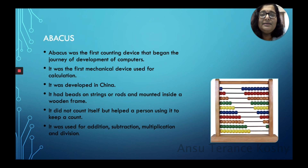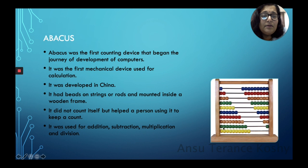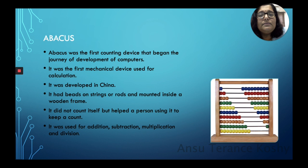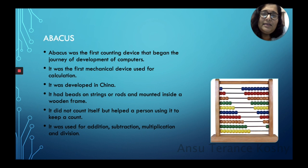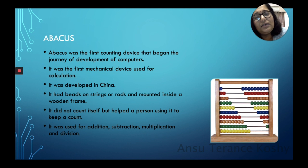The abacus was developed in China. It had beads on strings or rods mounted inside a wooden frame — you can see the picture on the right side showing the wooden frame with beads placed inside it. It did not count by itself but helped the person using it to keep a count by moving the beads. It was used for addition, subtraction, multiplication and division.